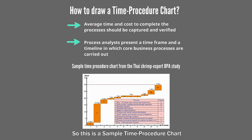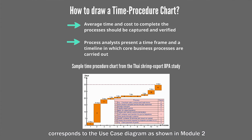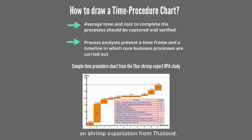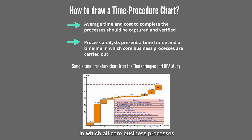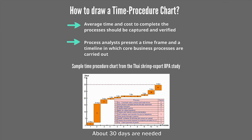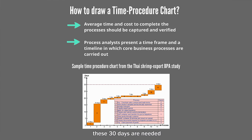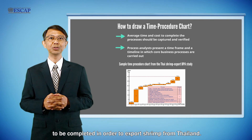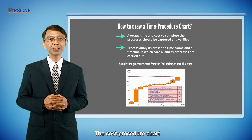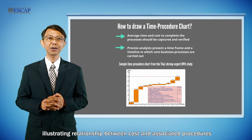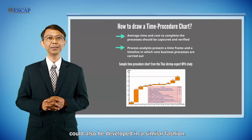This is a sample time procedure chart from the Trim Exportation BPA study. This time procedure chart corresponds to the use case diagram discussed in module 2 about the scope of a BPA project on trim exportation from Thailand. It symbolizes the time frame and timeline in which all 11 core business processes occur — about 30 days are needed to fulfill all these core business processes to export trim from Thailand. A cost procedure chart illustrating the relationship between cost and associated procedures could also be developed in a similar fashion.